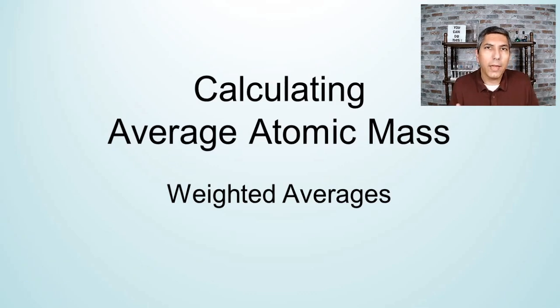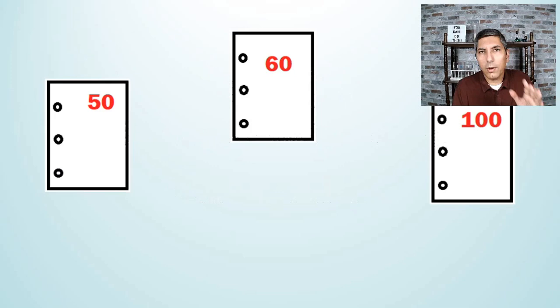We find that isotope data from elements are weighted averages. When I say weighted average, let's talk about what we're meaning here. Very often, if you have a class and you have perhaps three tests that you're taking, and you have to find the average of those three scores, like 50, 60, and 100 for example...